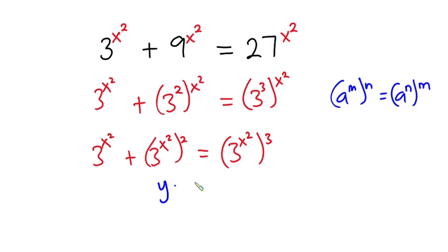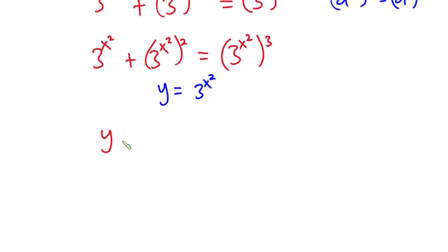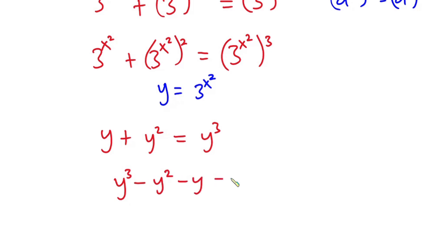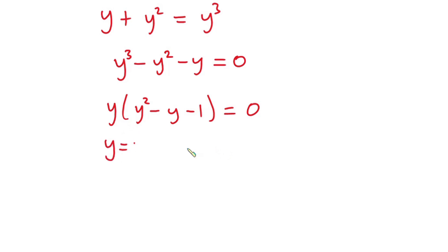Now I will let y equal 3 to the power x squared. So this equation becomes y plus y squared is equal to y cubed. Equating everything to zero, we have y cubed minus y squared minus y equals zero. Factoring y out, we have y times y squared minus y minus one equals zero.